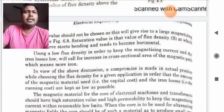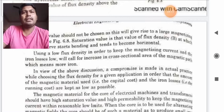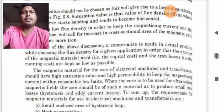The magnetic material for the core of electrical machines and transformers should have high saturation value and high permeability to keep the magnetizing current within reasonable low limits. When the core is to be used for alternating magnetic fields, the core should be of such a material as to produce small iron losses.